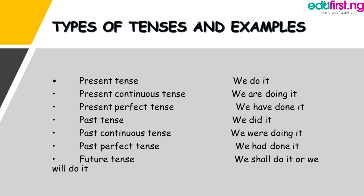Then the future tense — those things that will come later, not something that is happening now or something that has happened, but things that will come in the future. Like 'they will do it,' or 'we shall do it.' We shall eat later. We shall take our breakfast at noon. We can see that they are scheduling their breakfast to be taken later.